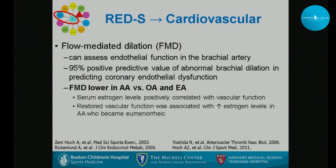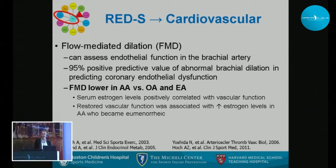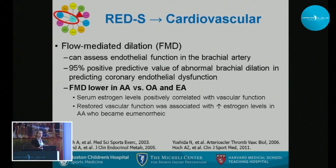With flow-mediated dilation, amenorrheic athletes had lower values than oligomenorrheic and eumenorrheic athletes, and serum estrogen levels positively correlated with vascular function. When amenorrheic athletes became eumenorrheic, their flow-mediated dilation improved, demonstrating that restored menstrual function is associated with improved vascular function.